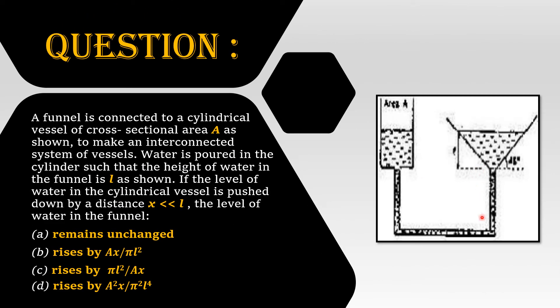Question. A funnel is connected to a cylindrical vessel of cross-sectional area A as shown, to make an interconnected system of vessels.